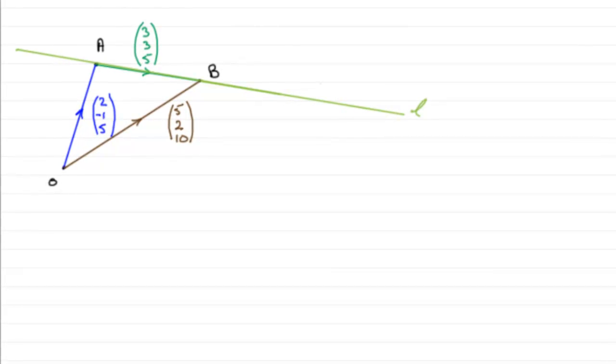Now for this part we're told that we've got a line L which passes through the points A and B, and we've got to find a vector equation for this line L. You'll notice I've updated the diagram with the vector A to B which we found in the previous part, 3i plus 3j plus 5k.